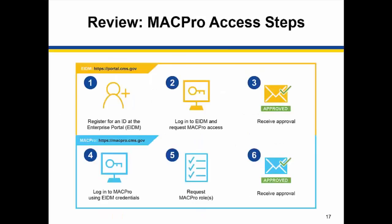To summarize the access steps: steps 1 through 3 are completed in the Enterprise Portal to set up your ID and request access to MACPro. Once approved, log into MACPro with your ID and request your MACPro specific roles. Since the MACPro access process is manual, please be sure to allot adequate time for approval of your role requests.